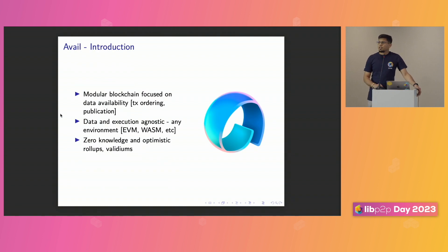I will make this quick. I think Wondertan has done an amazing job of explaining what is data availability and how they utilize it in Celestia. And I see many of you have also used Celestia, so you might already know this. But just for having the same starting point, it's a modular blockchain focused on data availability. We do only transaction ordering and publication. It's data and execution agnostic, so it doesn't matter what kind of execution engine you use. You can use EVM, WASM, or any other sophisticated mechanism. And it supports any type of proof systems like zero-knowledge proofs, optimistic, validiums, and such.